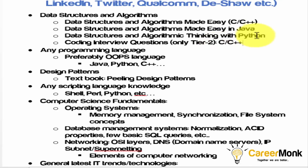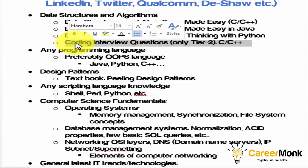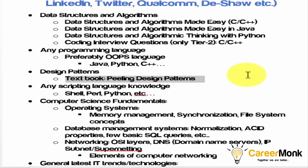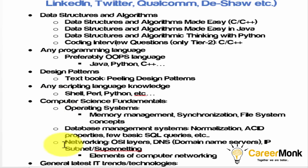If you are preparing specifically for tier 2 companies, you can go for 'Coding Interview Questions.' This book is only for tier 2. If you buy it, you don't need to buy Peeling Design Patterns separately since design patterns are also covered in it — but in C/C++ implementation. Peeling Design Patterns uses Java. This coding interview questions book also covers networking, DBMS, and OS concepts from our computer science fundamentals list.